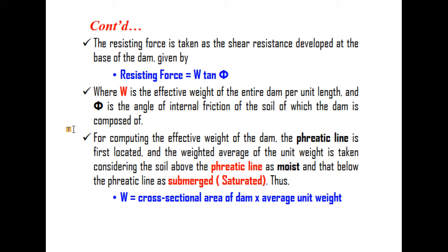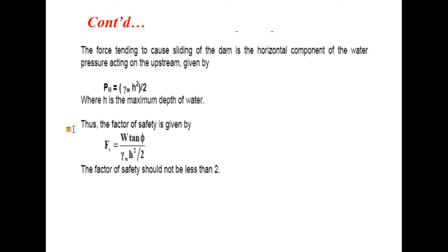For computing the effective weight of the dam, the phreatic line is first located. The weighted average unit weight is considered, taking the soil above the phreatic line as moist and the soil below the phreatic line as submerged or saturated. W equals cross-sectional area of the dam times average unit weight. The phreatic line helps identify moist and submerged zones of the embankment dam.